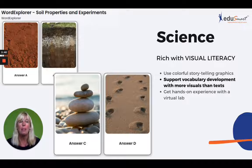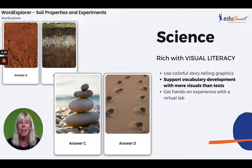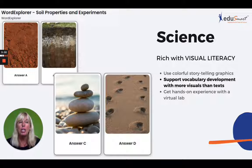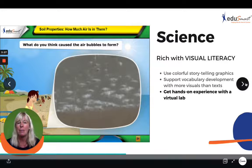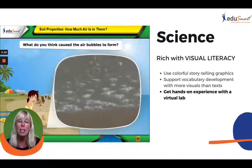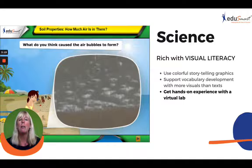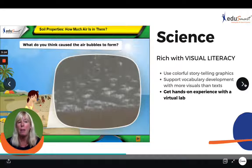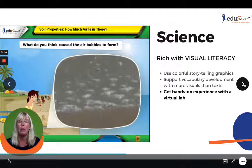This Word Explorer is over soil properties and experiments. It combines the use of text, audio, and visual descriptions to ensure that students understand and retain the words and their meanings. Next, I picked a demonstration or lab simulation called Soil Properties: How Much Air Is In There? This discusses the volume of air bubbles displaced by different soil types.